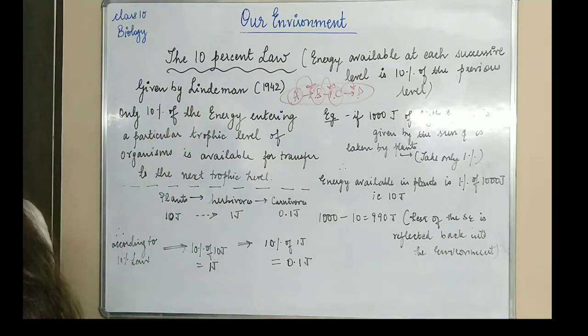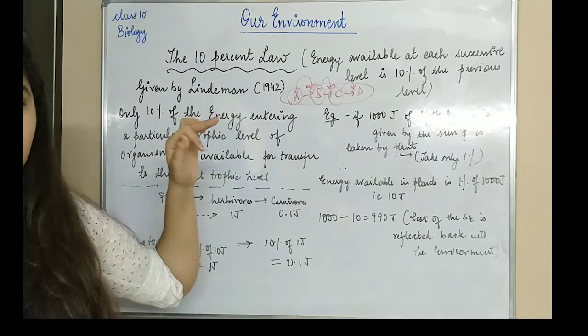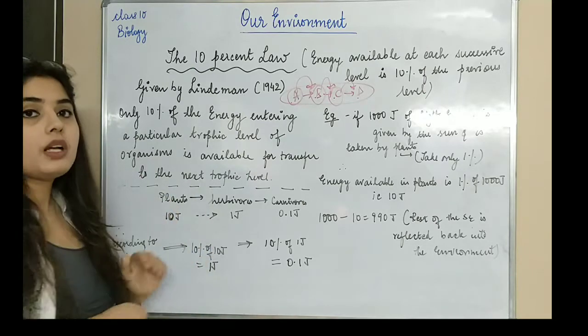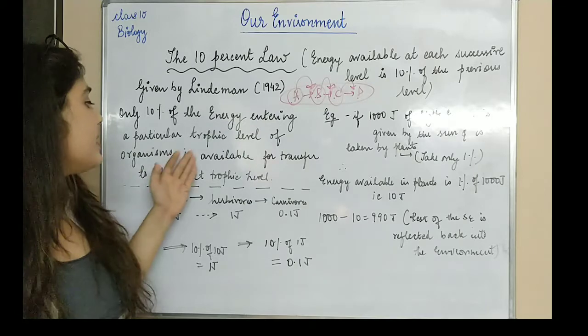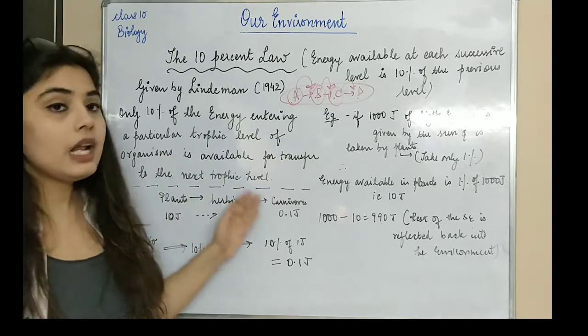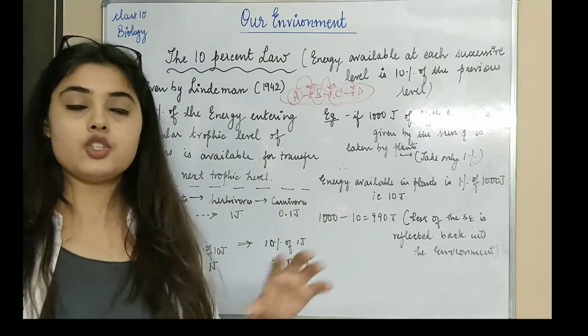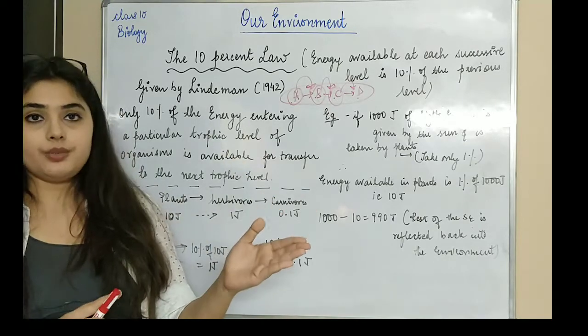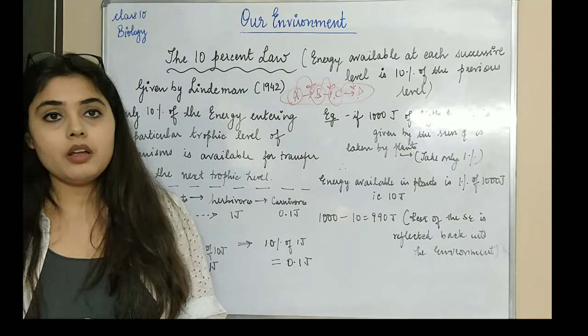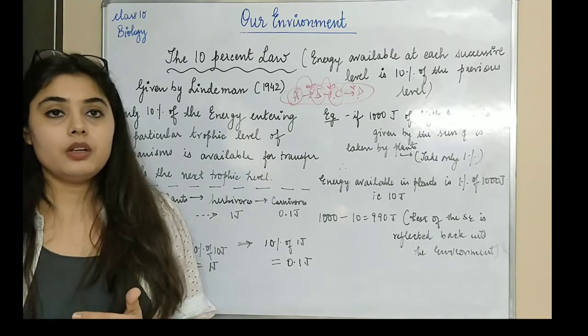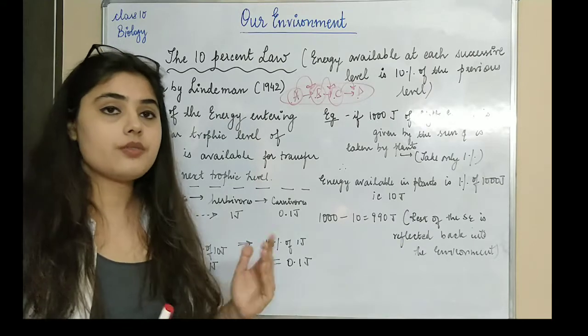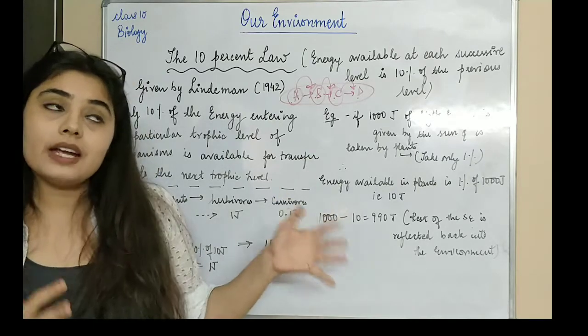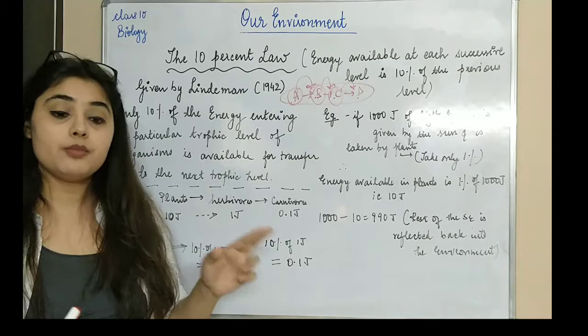The 10% law was given by Lindeman in 1942. What is it stating? Only 10% of the energy entering a particular trophic level of organism is available for transfer to the next trophic level. If we have four trophic levels, the energy being transferred from the first one to the second one - we won't say that 100% of the energy available at the first trophic level will completely go into the second. We will say that 10% of that energy present in the first trophic level will move to the second one.